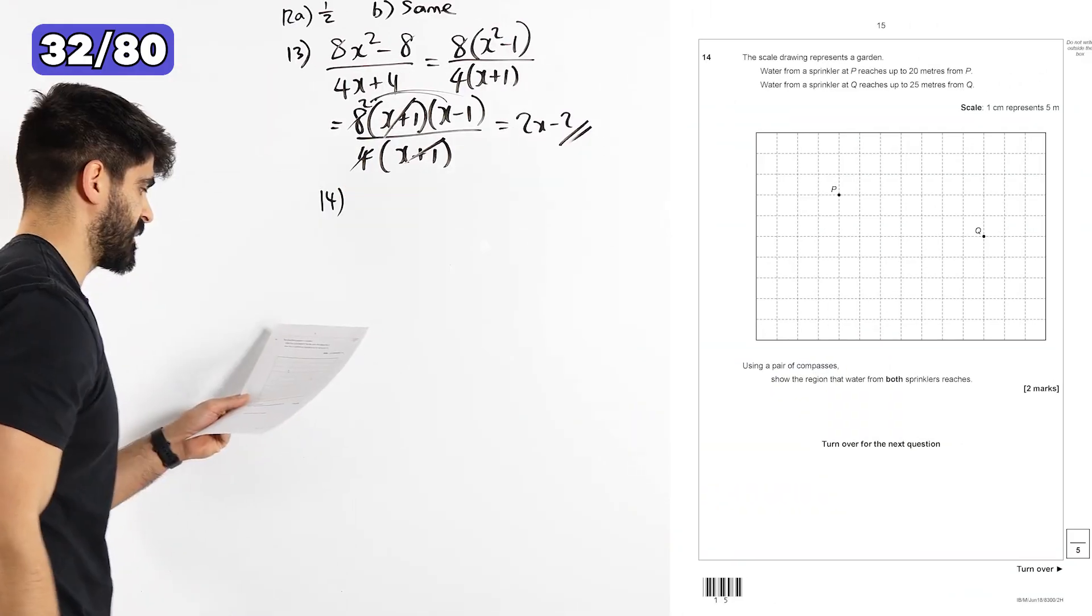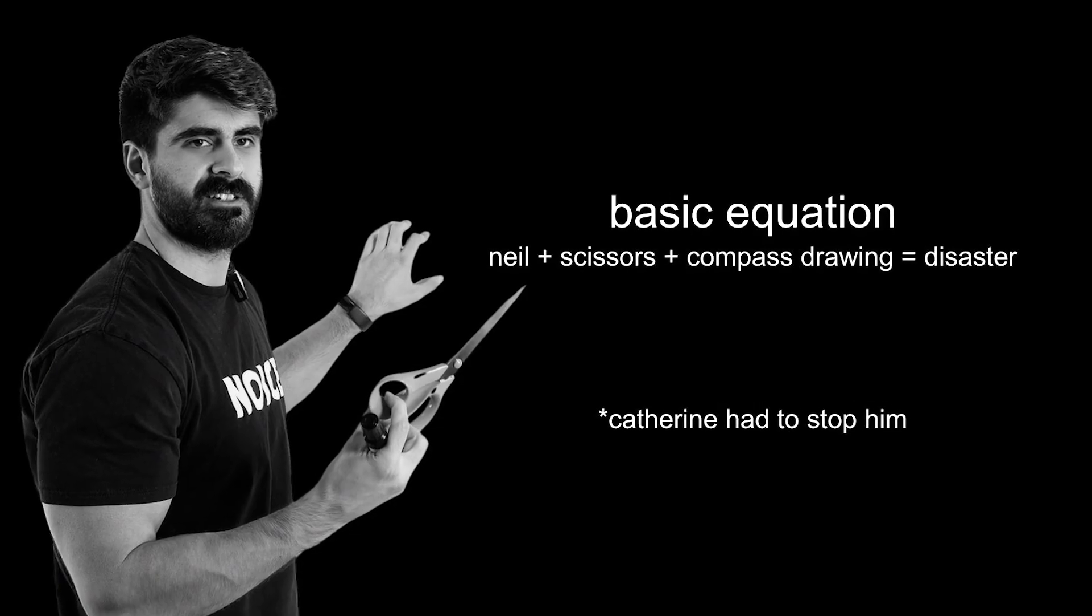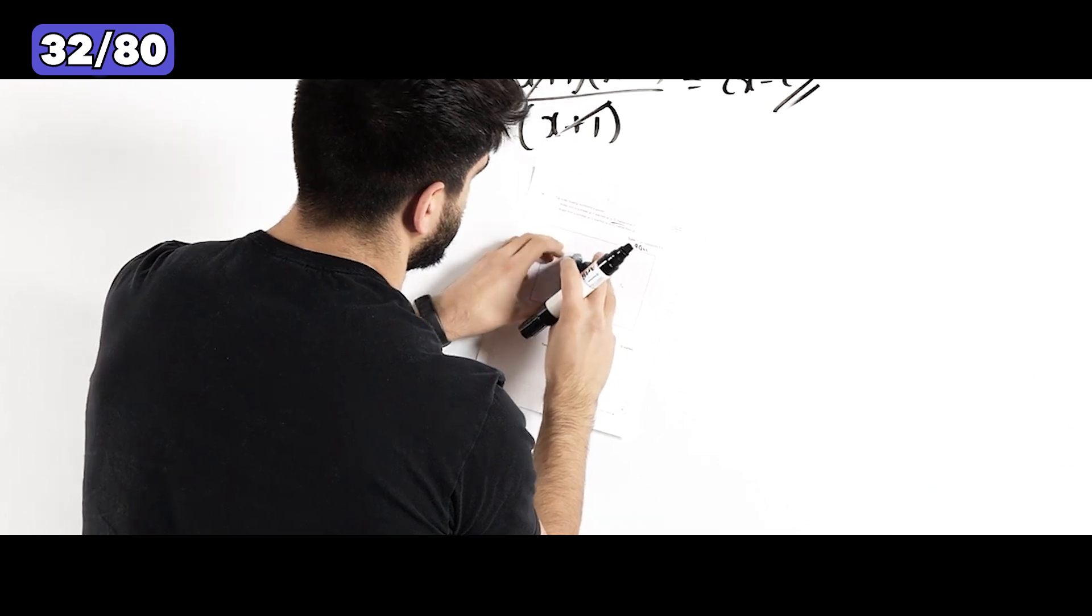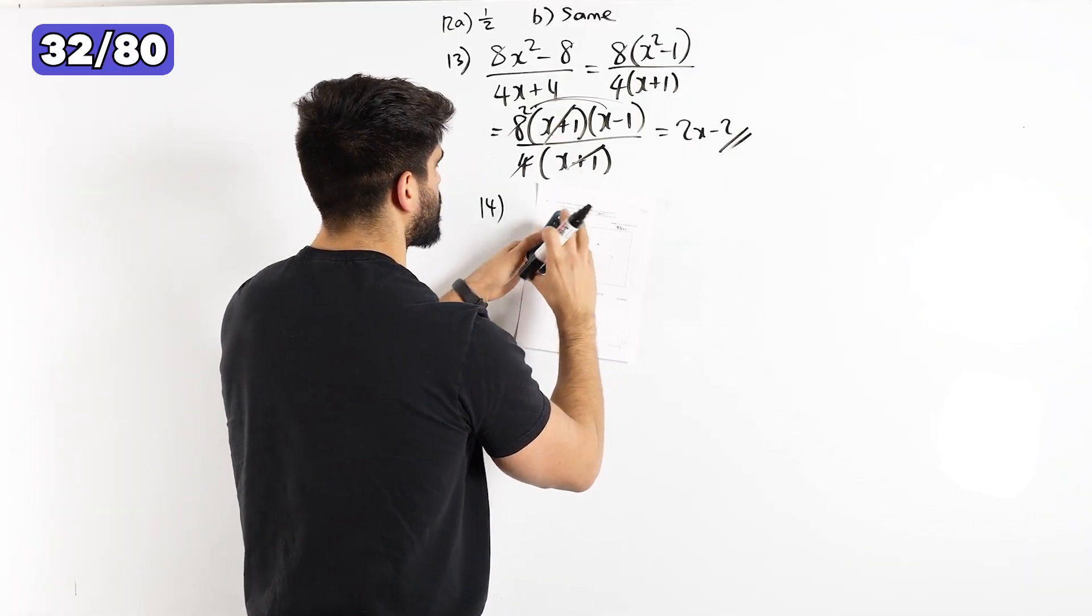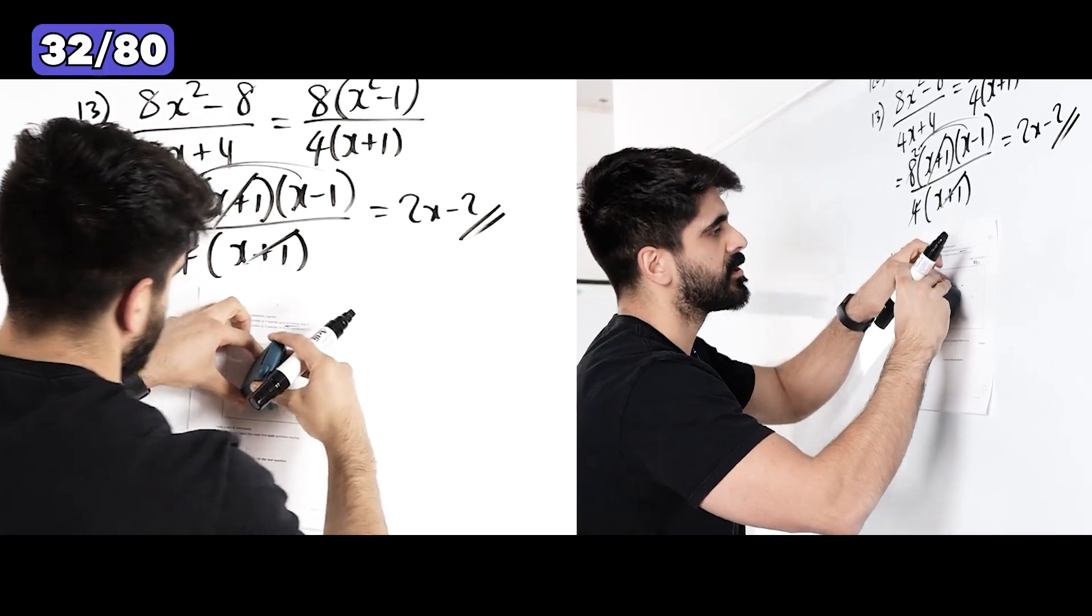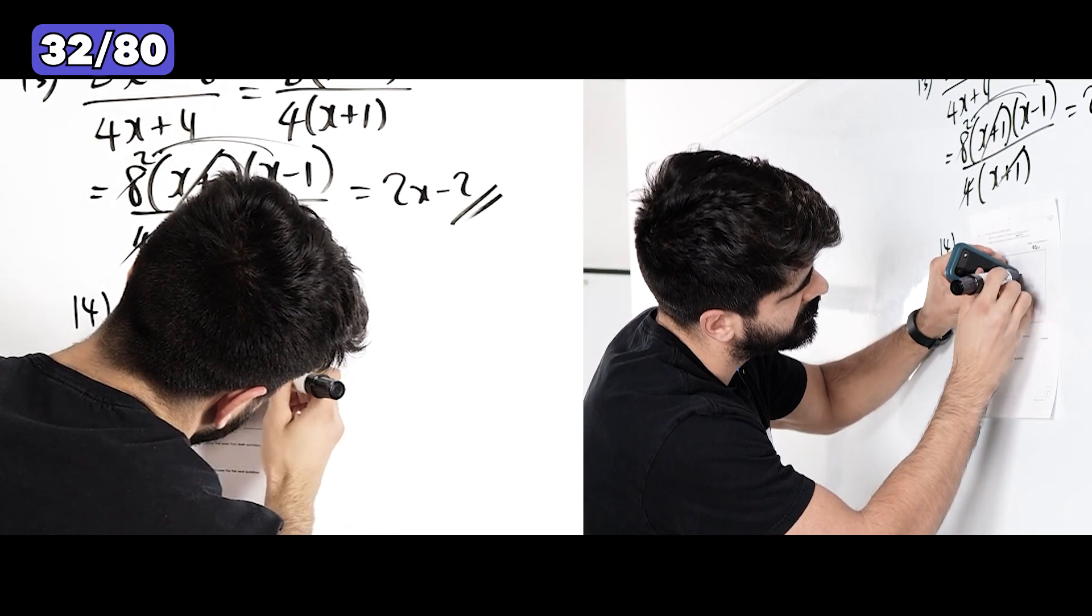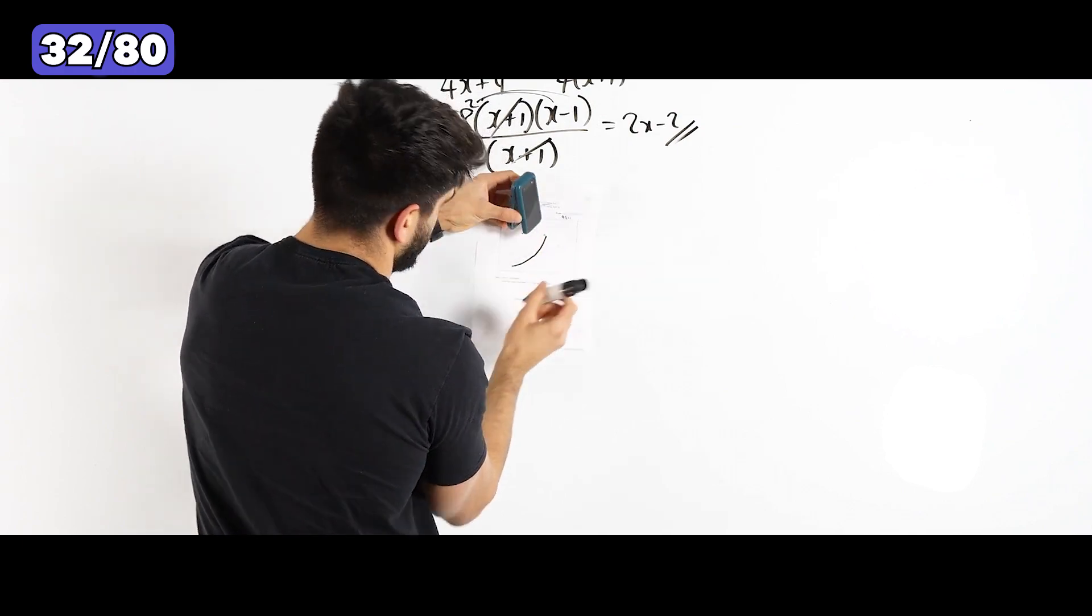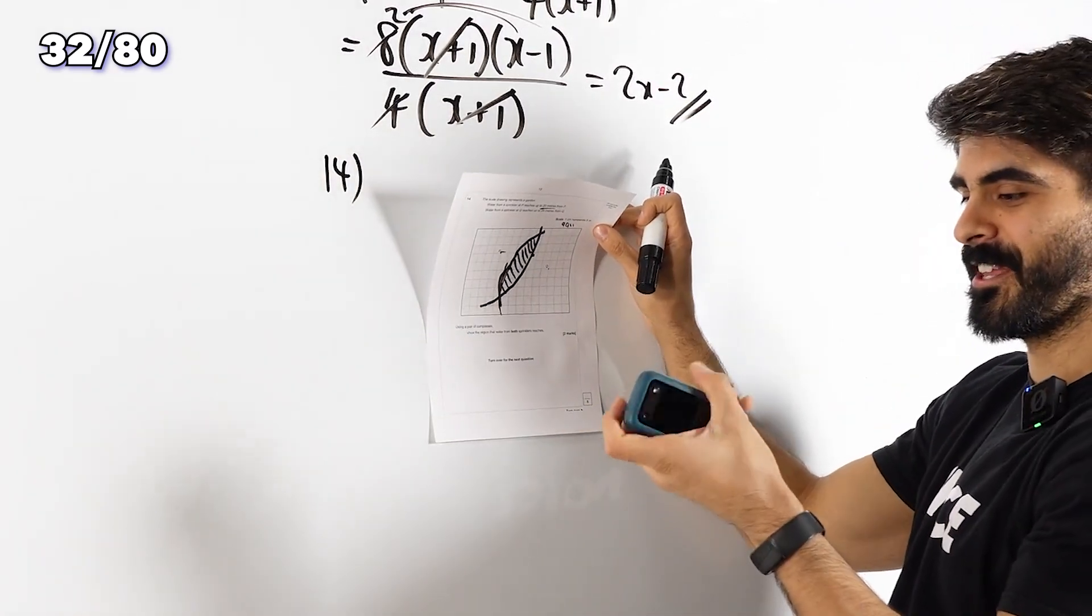Question 14, the scale drawing represents a garden. I need a compass. But how am I going to use my phone for this? It thinks I need to SOS call someone. Oh my God. Let me turn off my phone. So I'm doing like this. But how am I? I'm going to try and draw my phone. It's not bad, is it? It was good enough. We're going to have to VAR check that one after.